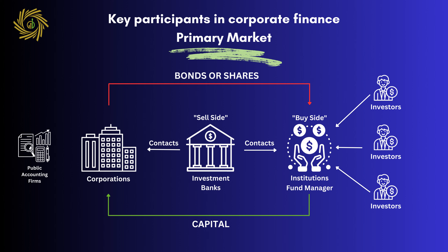Additionally, public accounting firms are involved in auditing and preparing financial statements for these corporations, which are used by institutional investors. To summarize, there are four key players in corporate finance: corporations that need capital, institutions that represent investors with money, investment banks that broker transactions between corporations and investors, and public accounting firms that oversee the financial information.